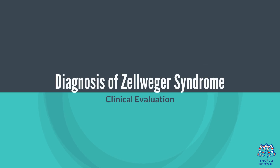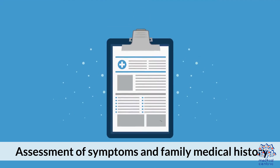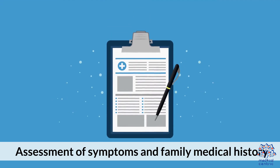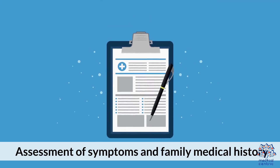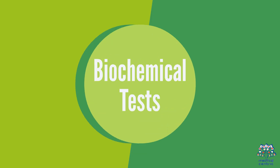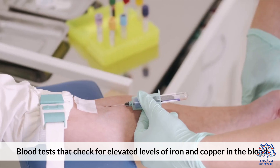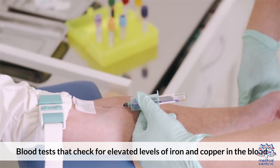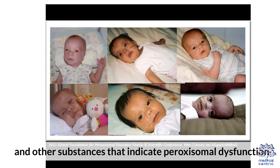Diagnosis of Zellweger Syndrome begins with clinical evaluation — assessment of symptoms and family medical history — followed by biochemical tests, which are blood tests that check for elevated levels of iron and copper in the blood and other substances that indicate peroxisomal dysfunction.